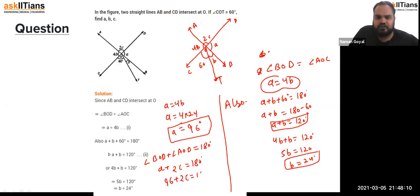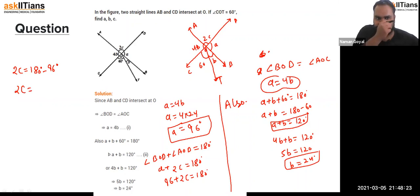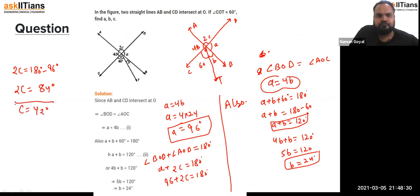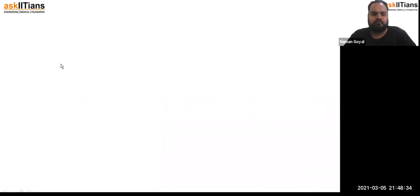For angle C: angle BOD plus angle AOD equals 180° (linear pair), so 2C + 96° = 180°, giving 2C = 84°, so C = 42°.